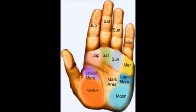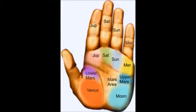The lower Mars area has to do with your physical energy; the Mars area has to do with your will and how you come across in the world; and upper Mars is how you expand your mind, your knowledge and your intuition. Rather than just looking at elevated areas, look at anything significant - if it's redder than other parts of the hand, if there are a lot more creases, or if you get a feeling about it when you move your hand over it. Take that into account because it will be significant.